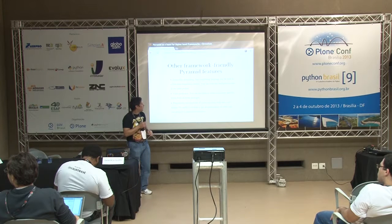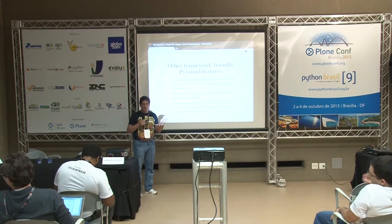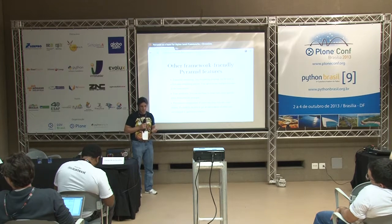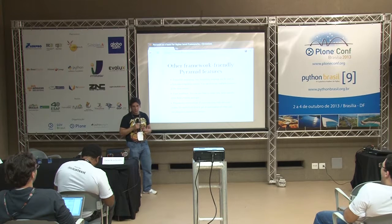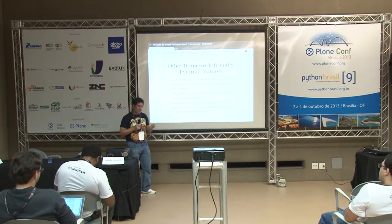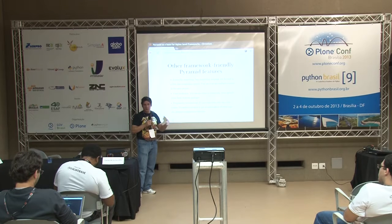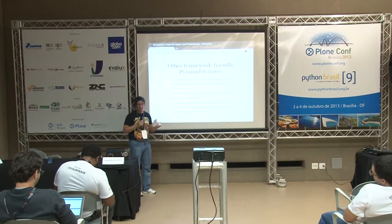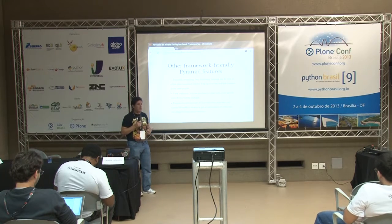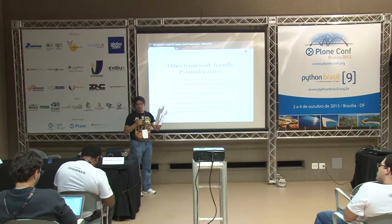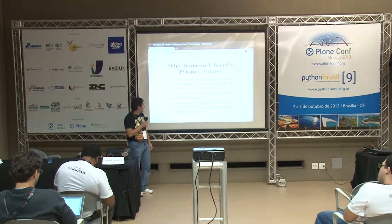You can even use several template systems on the same project. There are renderers for Jinja2, Mako, and Chameleon — the templates that come from Zope — and a couple more. It's really easy to create another renderer for whatever templating language you want to use, even custom templating languages for a specific application.